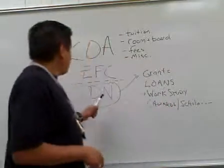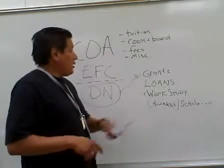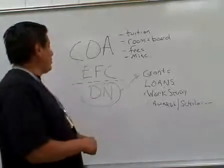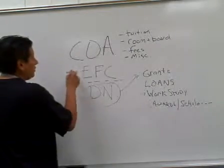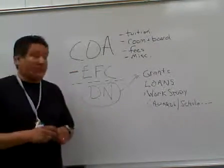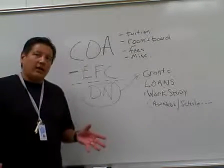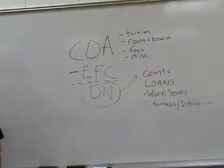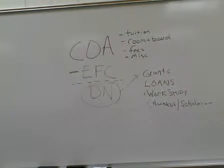So to recap: demonstrated need, grants, loans, work study, awards and scholarships — maybe at the school, but it works. Cost of attendance (COA) minus estimated family contribution comes up with your demonstrated need. That's the way the financial aid process works in terms of getting you money. Financial aid works to your advantage. When it comes to next year, make sure to use us — Upward Bound — to get the assistance you need.